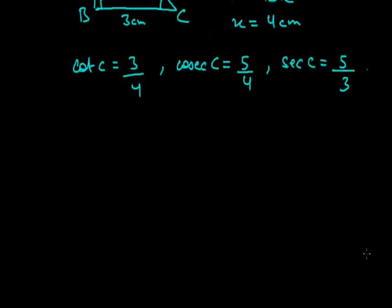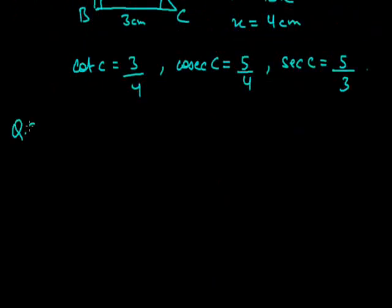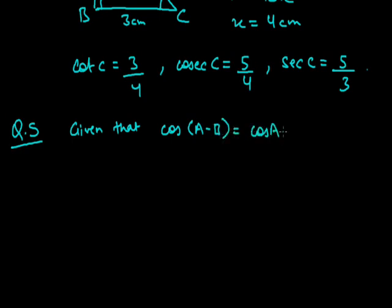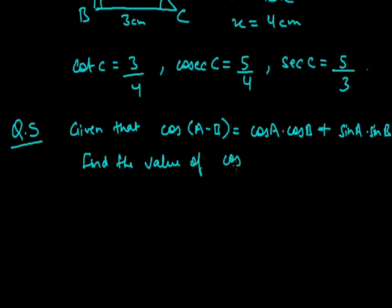Now we will see one more question based on trigonometry ratios. The question is: Given that cos(A − B) = cos A · cos B + sin A · sin B, find the value of cos 15°.